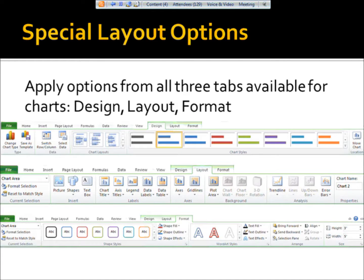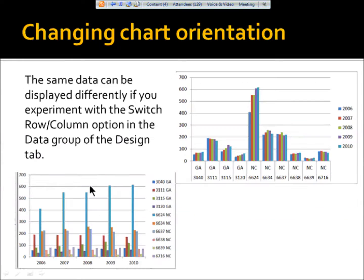One of the things you'll see on the design ribbon is this option to switch rows and columns. Sometimes when you select data for a chart, you're going to lay it out, and as in this chart, it shows the years on the bottom, and then shows the store numbers related to different states on the right.